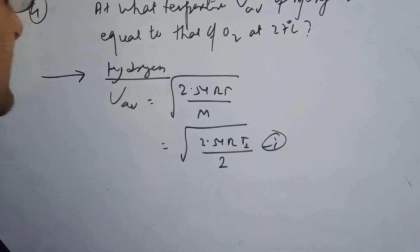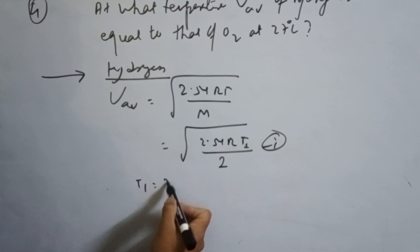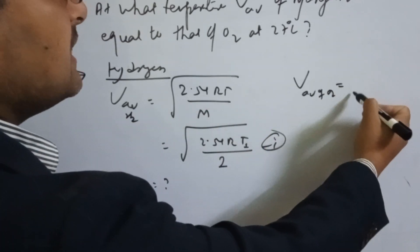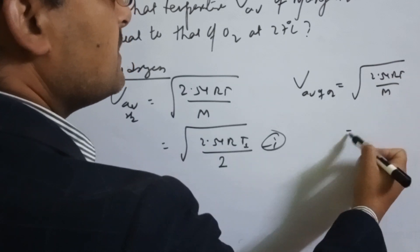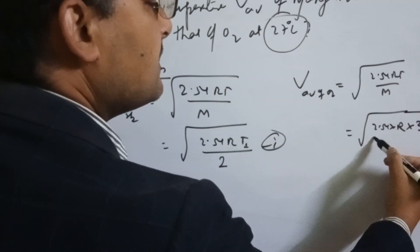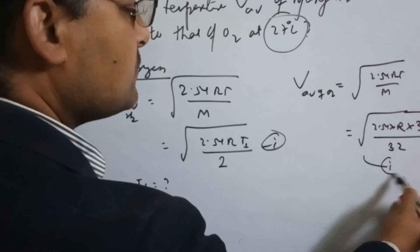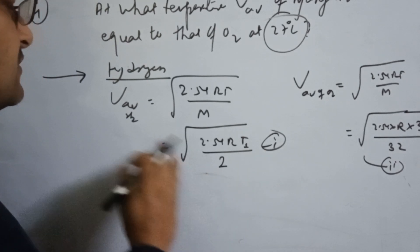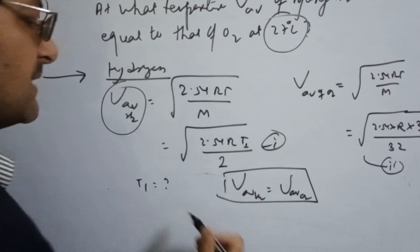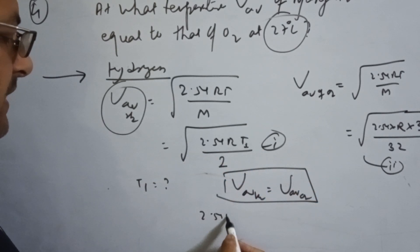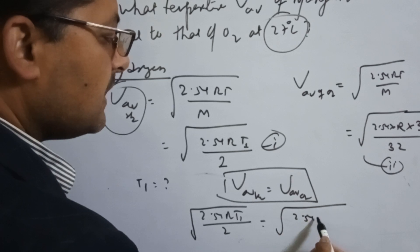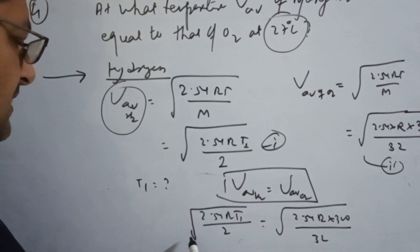For hydrogen, M₁ = 2. Setting the average velocity of hydrogen equal to that of oxygen: root(8RT₁/πM₁) = root(8RT₂/πM₂). Cancelling common terms gives T₁/2 = 300/32, so T₁ = 18.75 Kelvin.